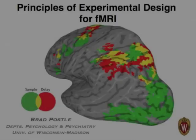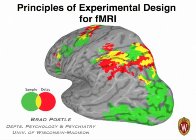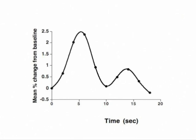Brad Postel again. With this web clip we'll be considering some of the principles of experimental design with fMRI, building on the previous web clip in that we will be considering how the low-pass filtering properties of the hemodynamic response impose constraints on how one can design and interpret fMRI studies, and some ways to get around these constraints.